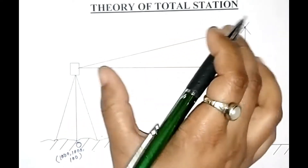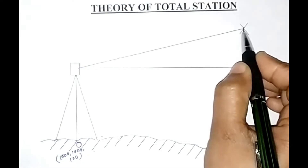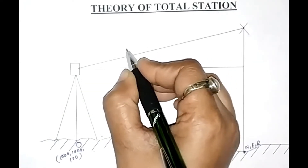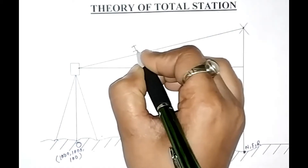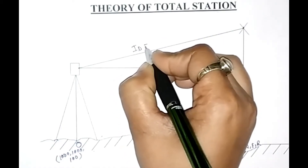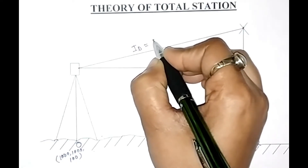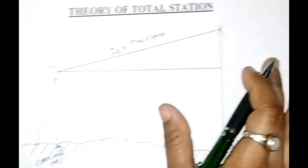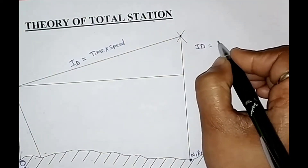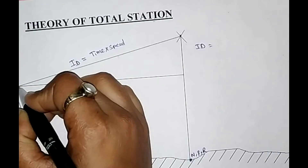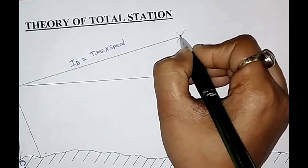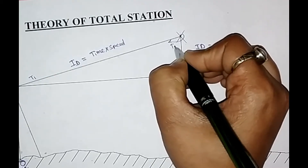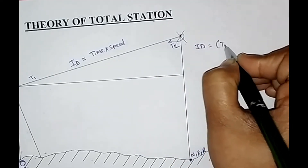In this process, the ray goes to the target and reflects back to the total station receiver. The total station calculates this inclined length — that is the inclined distance ID. The time required to bisect the target is T1 and the time for the ray to reflect back is T2. So our time difference is T2 minus T1.